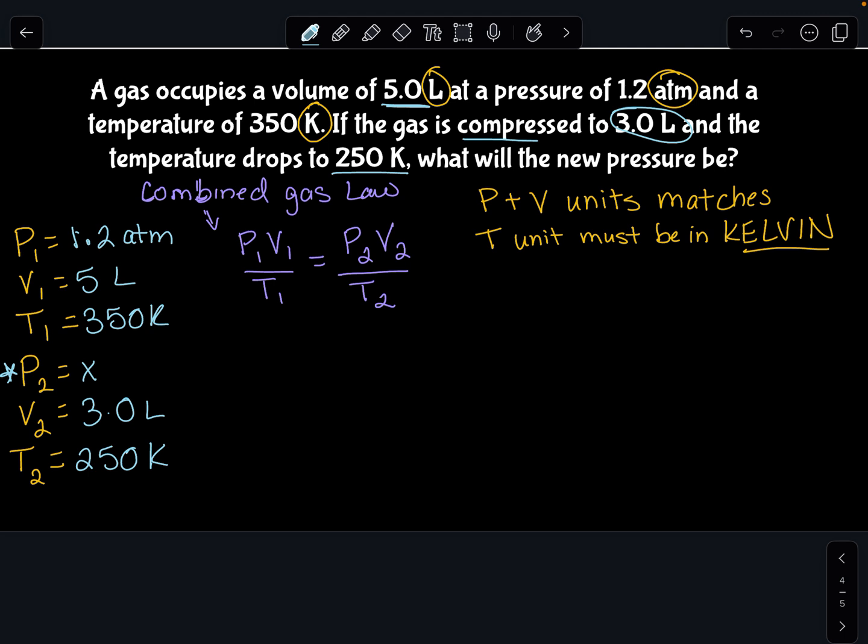Now remember, go ahead and just plug these values into the equation that you wrote. So I have 1.2 times 5 over 350, and that's going to be equal to X times 3 over 250.